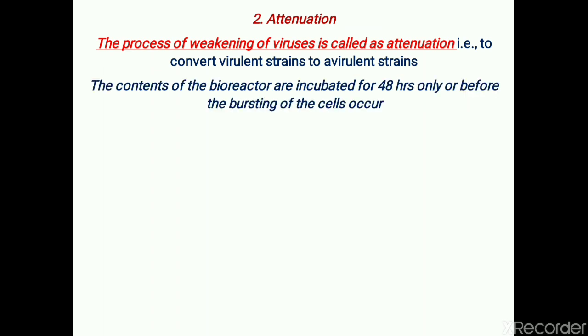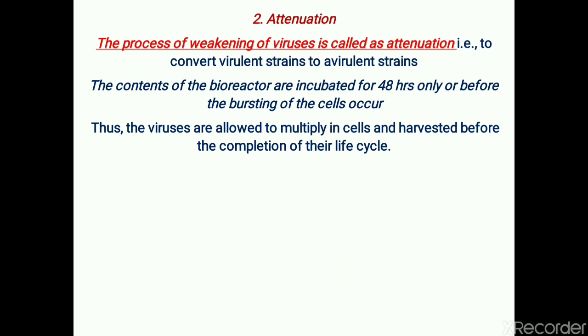The next step is attenuation — the process of weakening viruses. This involves converting virulent strains of virus to avirulent strains, meaning there should be a loss of virulence. The contents of the bioreactor are incubated for 48 hours only, before the bursting of cells occurs, representing a period before the completion of the total life cycle of the virus. The viruses are allowed to multiply in cells and harvested before the completion of their life cycle.